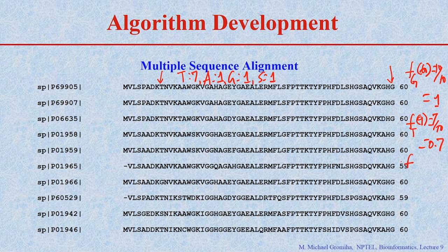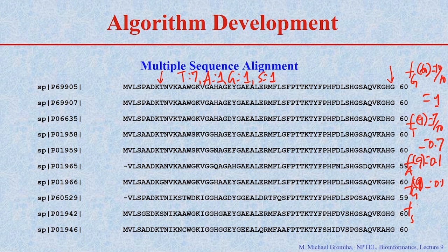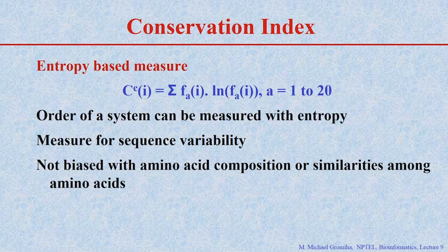The frequency of threonine at position 9 equals 7 by 10, which equals 0.7. The frequency of alanine at position number 9 equals 0.1, the frequency of glycine at position number 9 equals 0.1, and the frequency of serine at position number 9 is also 0.1. Now we convert these frequencies into scores.